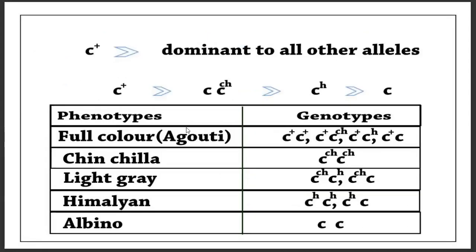So we have different phenotypes. The first is the agouti — the normal or wild type phenotype. It may be present in different genotype combinations, such as C-plus C-plus, which is the homozygous condition for the agouti allele, or C-plus and C superscript H, the heterozygous combination of the agouti allele along with the Himalayan allele.